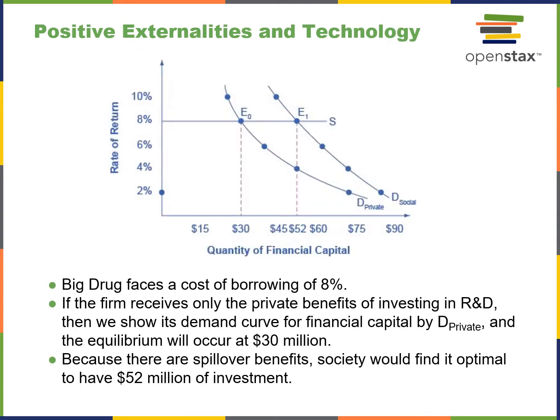Regarding positive externalities and technology: suppose a big drug firm faces a cost of borrowing of 8%, and the firm only receives the private return on R&D investment. We show the demand curve for financial capital as D-private. The equilibrium occurs at 30 million dollars at 8%. However, because there's a spillover benefit, society would find it optimal to have 52 million dollars of investment, where the social equilibrium is derived. Social benefits basically outweigh the private ones in this particular example.